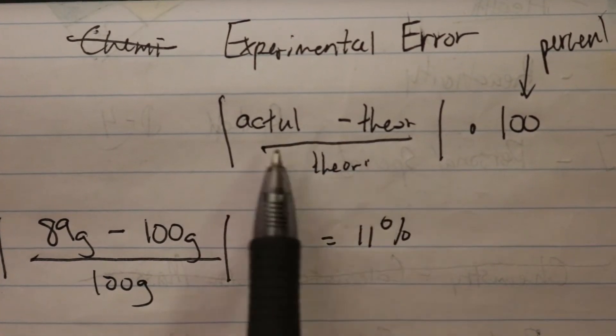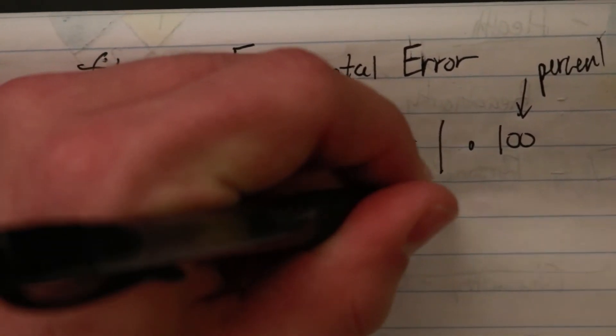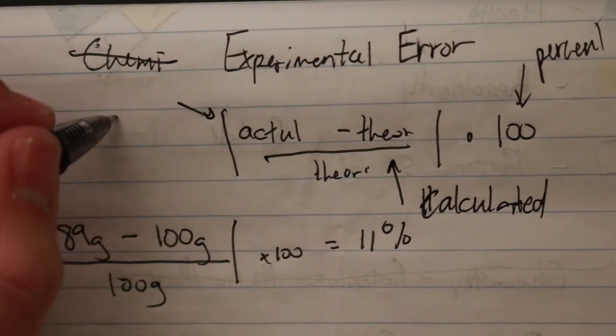Remember, actual minus theoretical over theoretical. Usually your theoretical is calculated, and then your actual is what is measured.